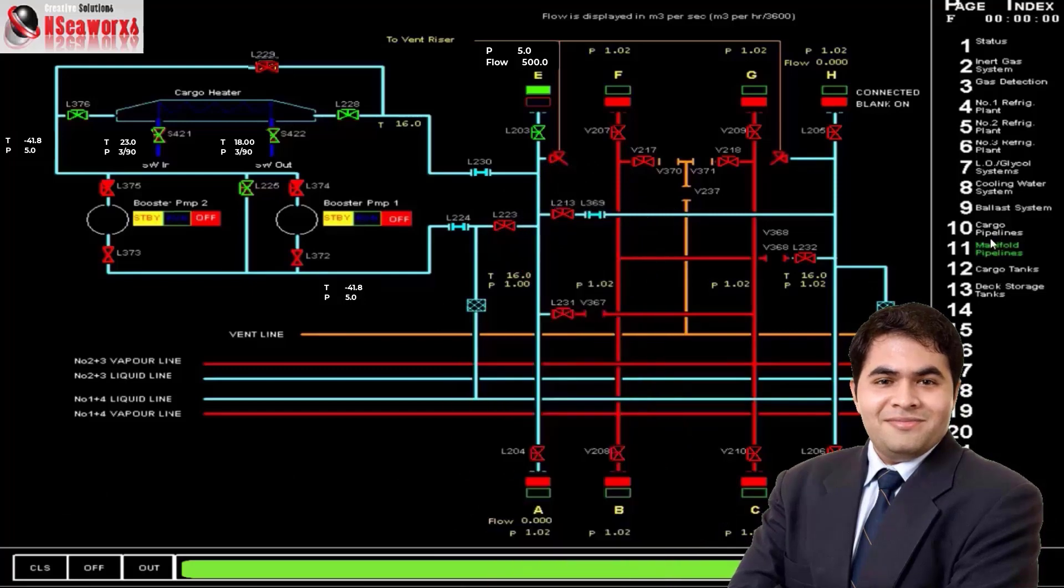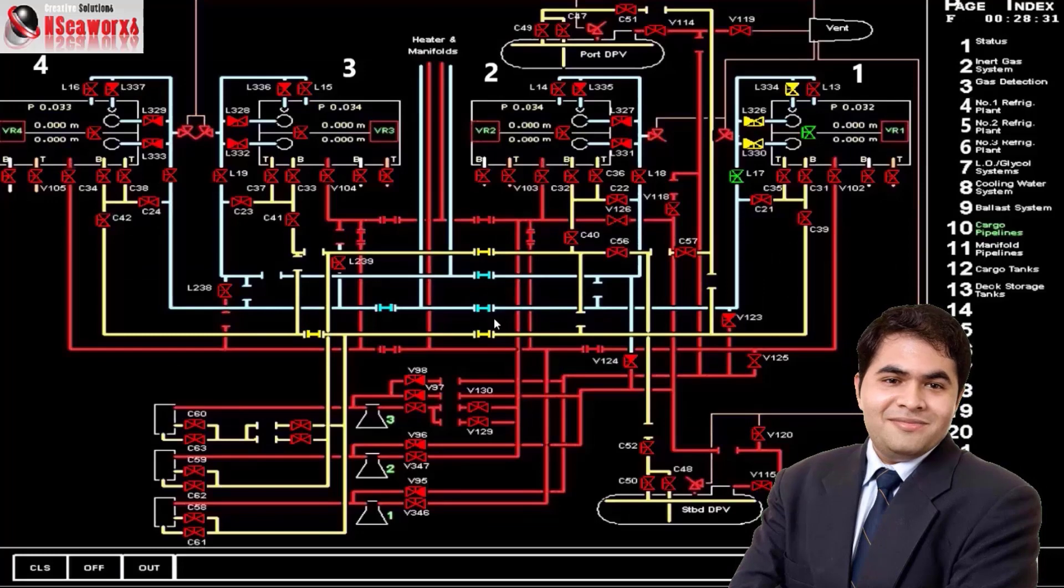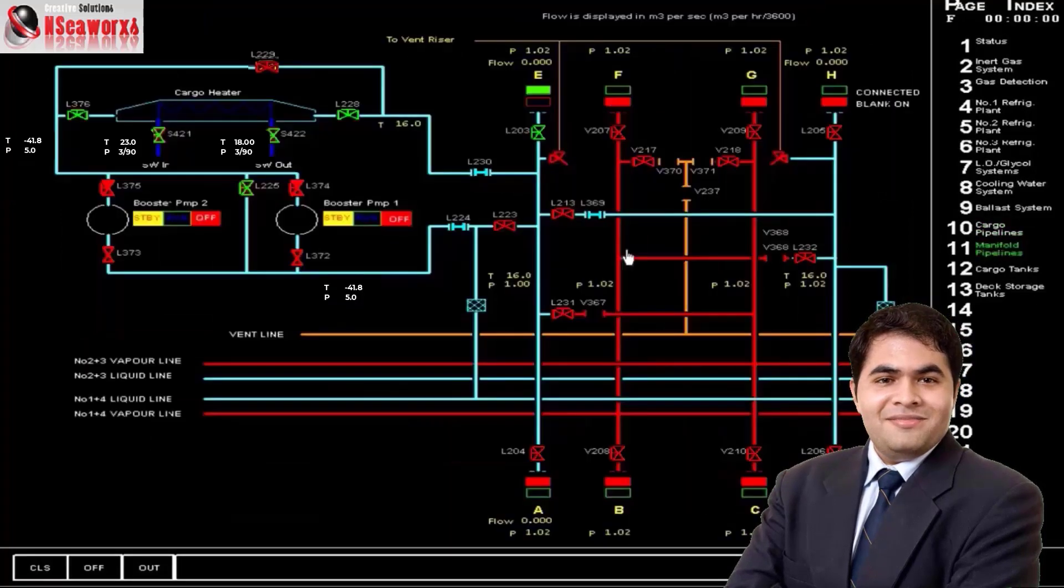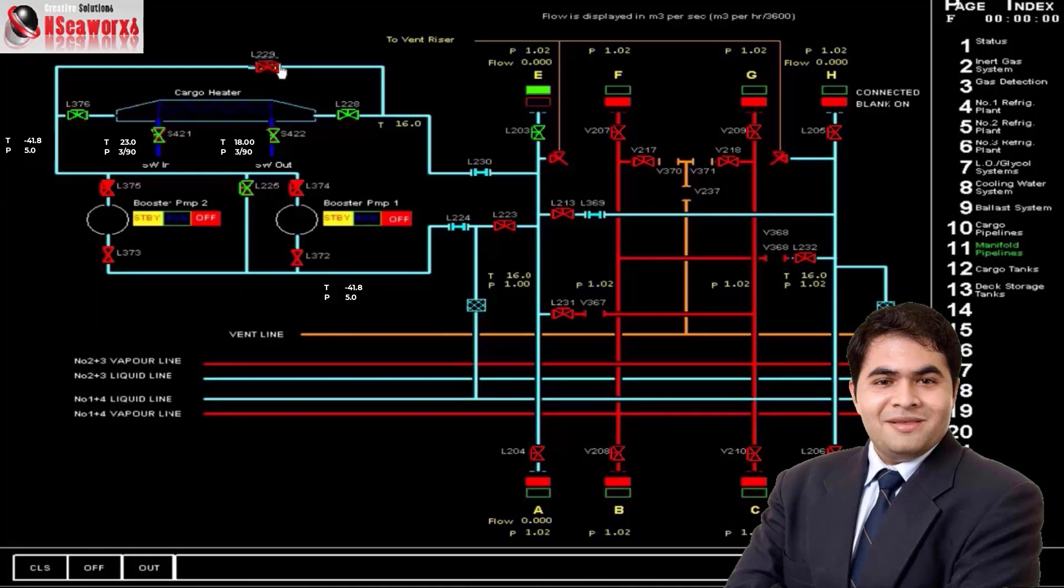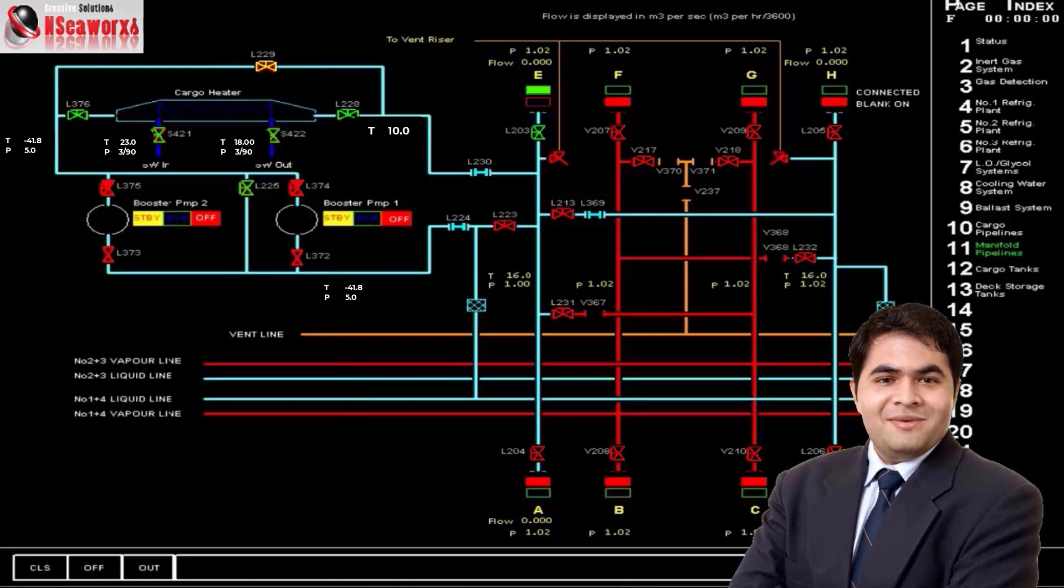If we trace the line, cargo pipelines from here is discharging all the way to the manifold, and to the manifold it goes to your heater. And then with the bypass valve, you are controlling the temperature. You just have to play with that valve until you meet the required temperature.